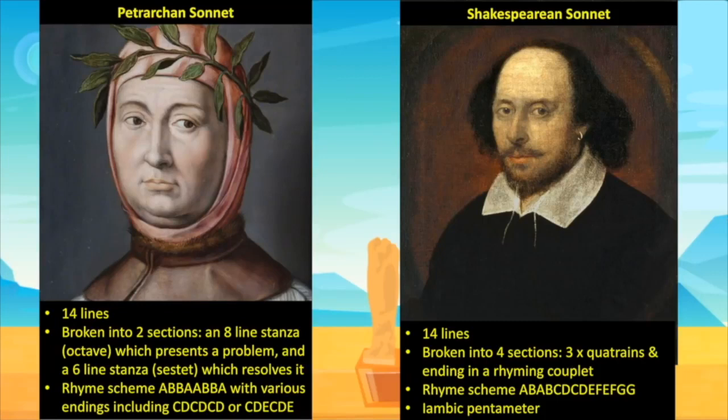Ozymandias is definitely a sonnet and in simple terms we can say that Shelley uses the sonnet form to highlight how Ozymandias is in love with himself — in love with his delusional sense of power and supremacy. But when we look closely at the poem, we see that it does not fit neatly into either of these sonnet forms.